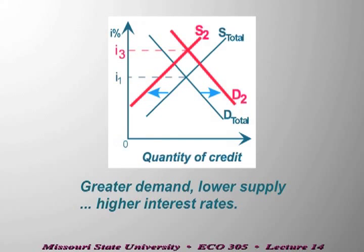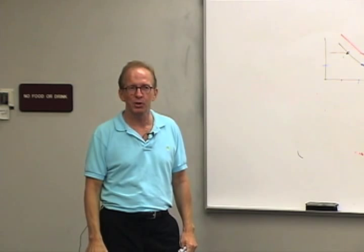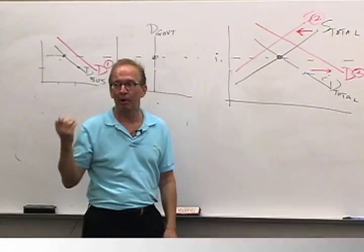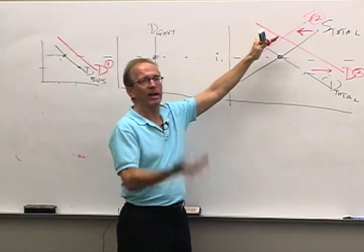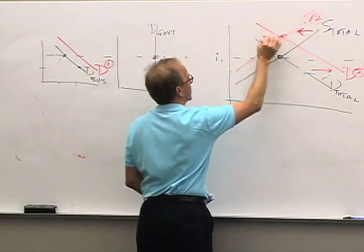Double whammy. These are both pushing in the same direction: the supply curve shifts to the left, the demand curve to the right — both saying higher interest rates. Smaller supply of credit means higher interest rate. Greater demand for credit means higher interest rate. Interest rates are up.